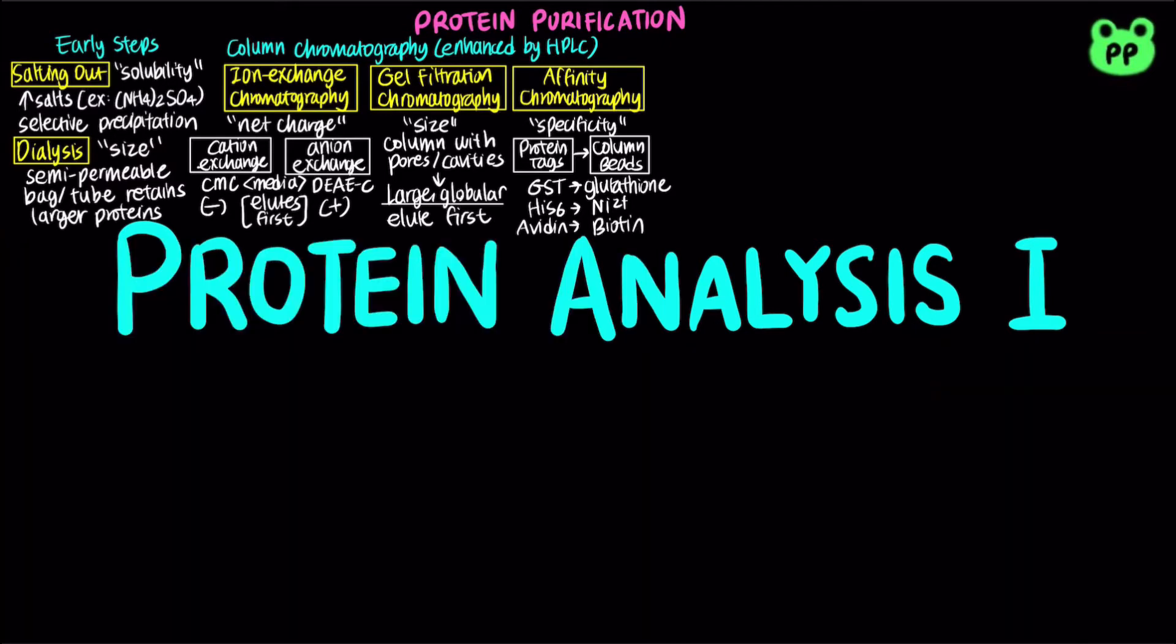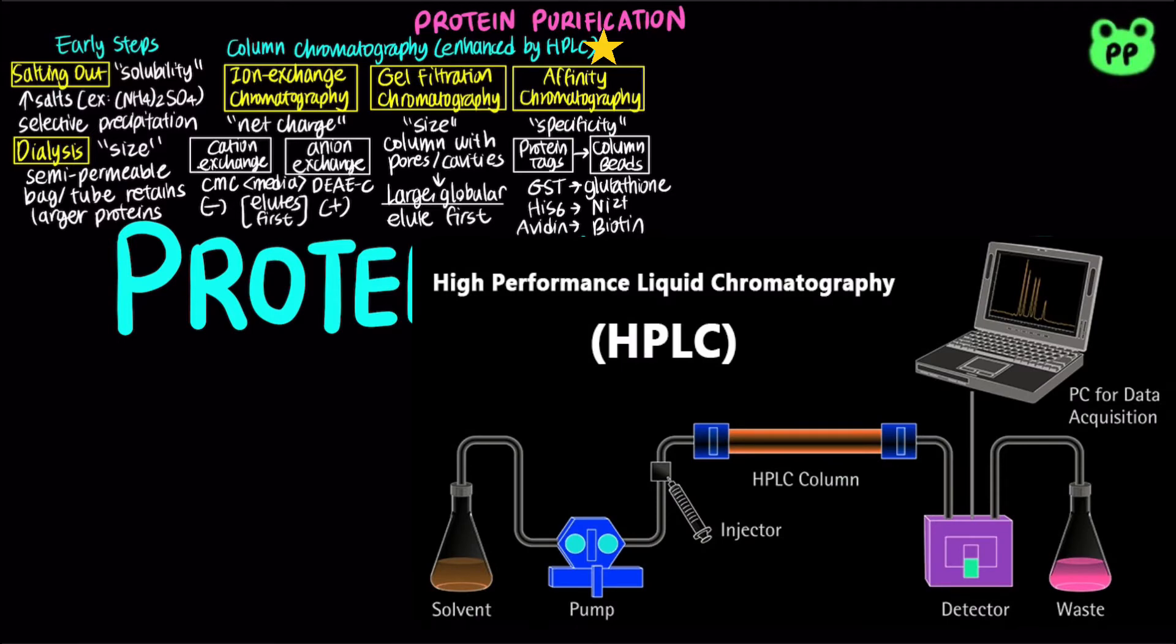Column chromatography can be enhanced by the use of HPLC, which stands for high-performance liquid chromatography, which makes use of high-pressure pumps to speed the movement of protein molecules down the column.